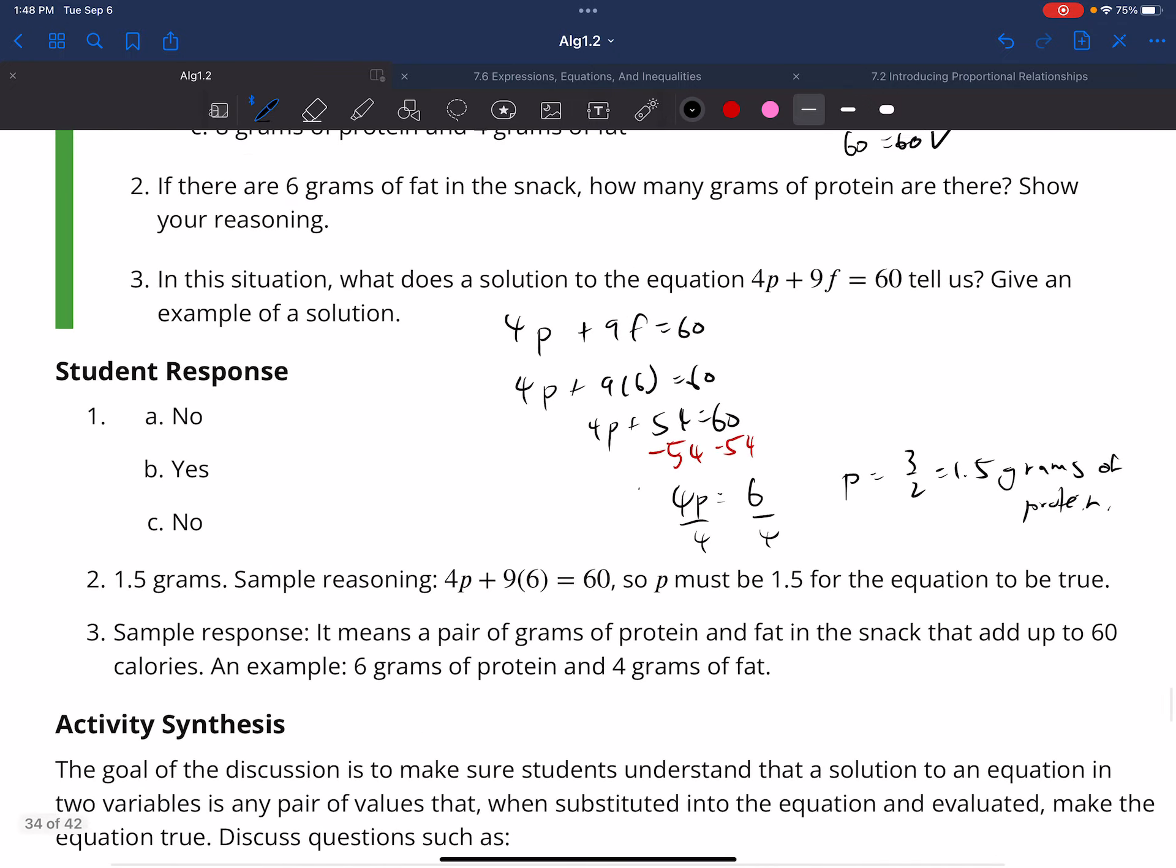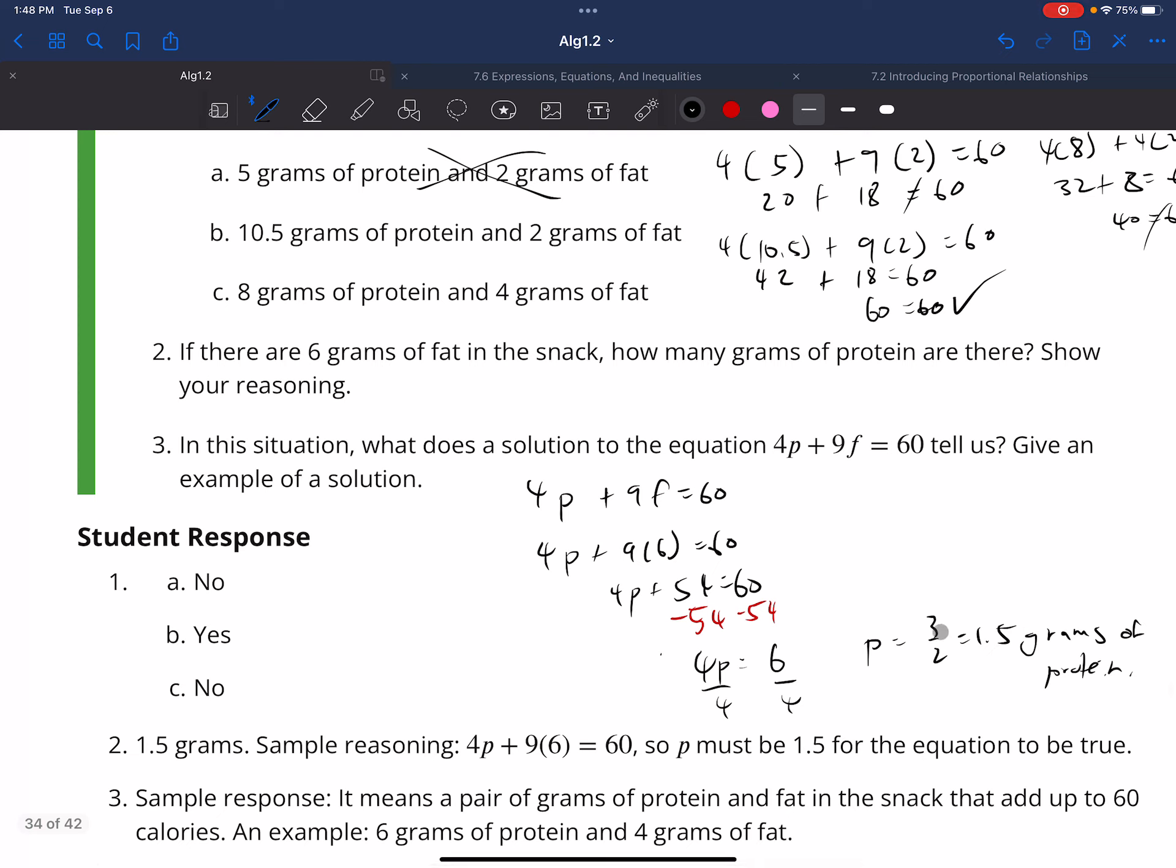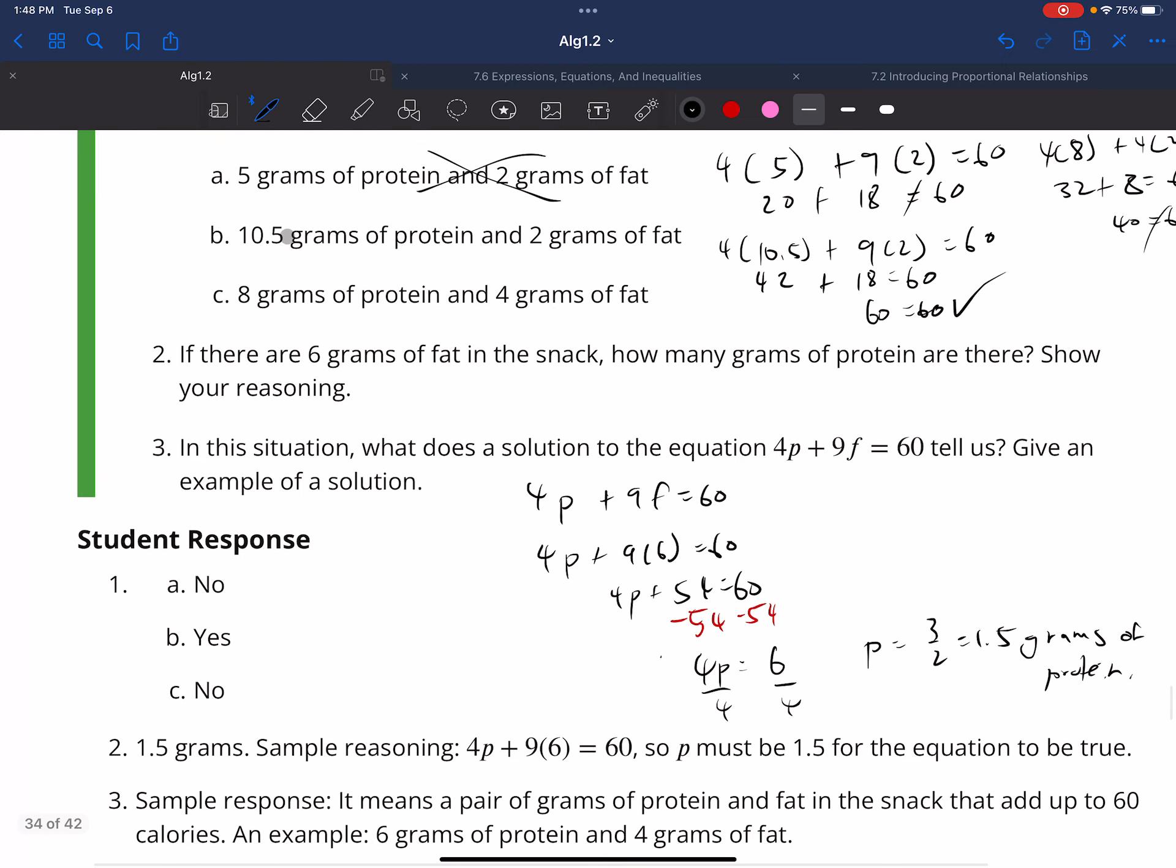And so a sample answer is it can be 6 and 4, because that's what we got here. Or not 6 and 4. It could be 10.5 and 2. That's the solution. Or what we did here is 6 grams of fat and 1.5 grams of protein. That would be a solution. So those are the examples of the solution.